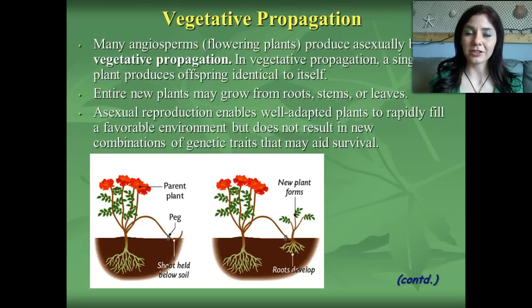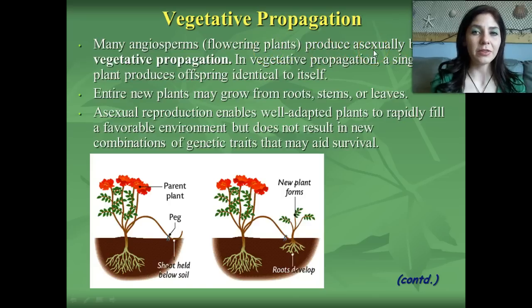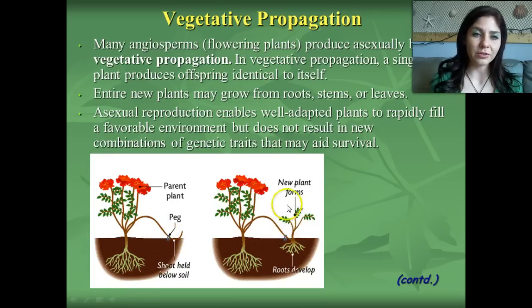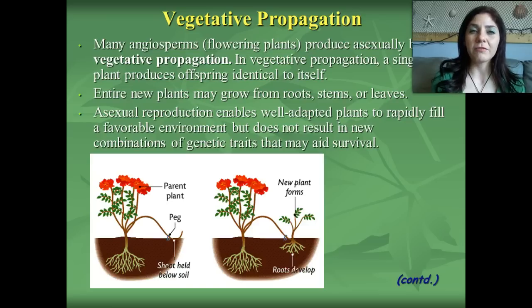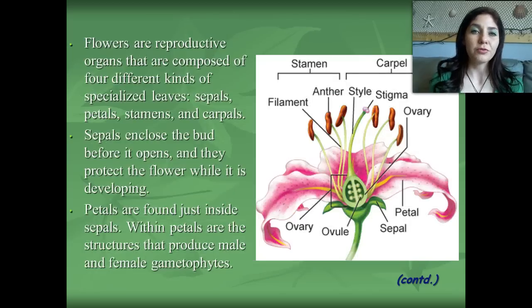Today we're going to be talking about plant reproduction and hormones. Vegetative propagation is a type of asexual reproduction expressed in angiosperms, which are flowering plants. In this process, a single plant produces offspring identical to itself — a plant might be clipped or a shoot held below the soil to eventually form an exact clone. Asexual reproduction enables well-adapted plants to rapidly fill an environment, however there's no variation, so if conditions change, all of them will die off because no new genes have been introduced into the gene pool.